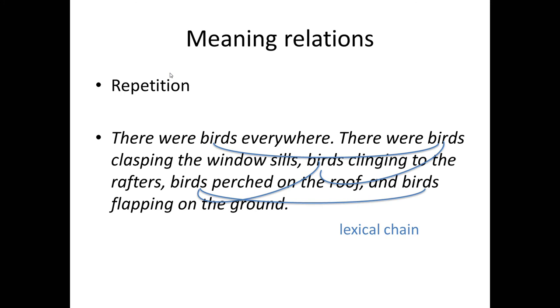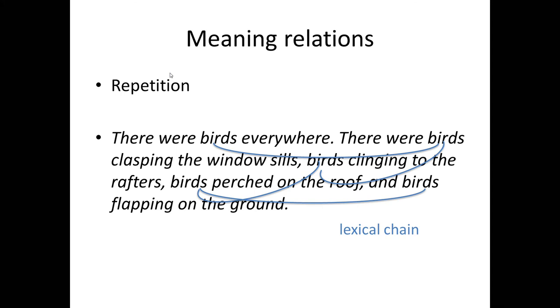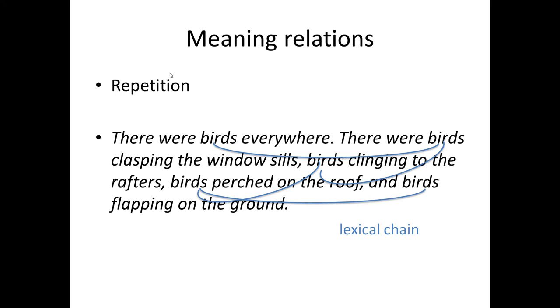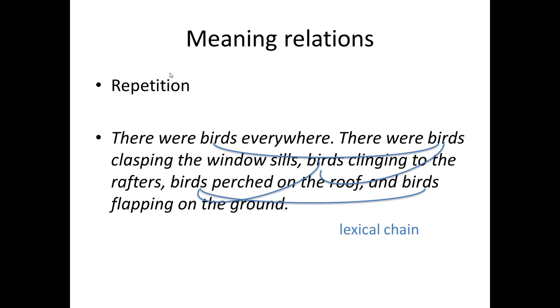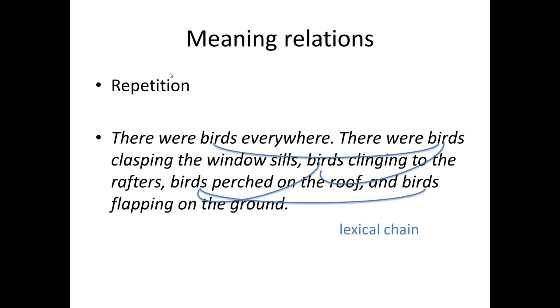Each link of the chain is associated with different aspects of the same theme: a set of different activities — clasp, cling, perch, flap — and a set of different places — ground, roof, rafters, window sill.